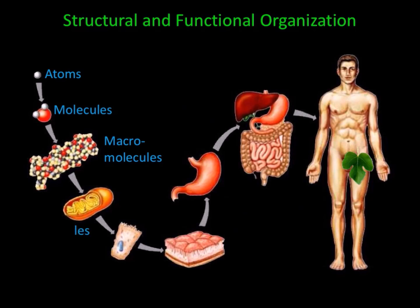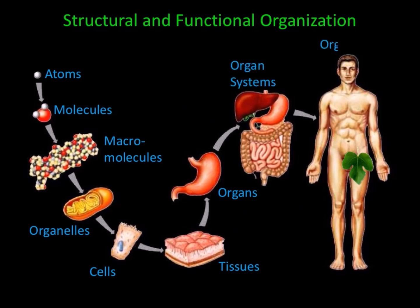Macromolecules form organelles. Organelles make up cells. A group of cells that perform a common function are called tissues. A group of tissues that perform a common function are called organs. A group of organs that perform a common function are called organ systems. And finally, a group of organ systems that come together form an organism — in this case, the human body.